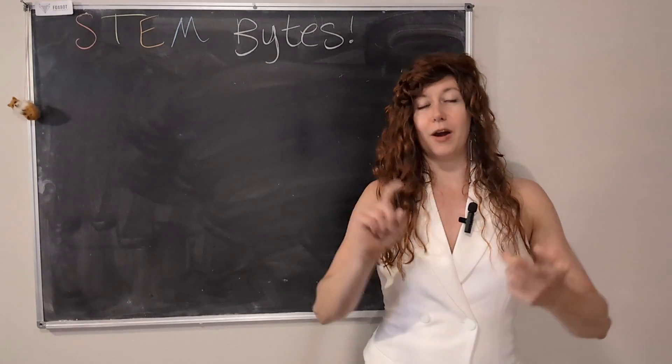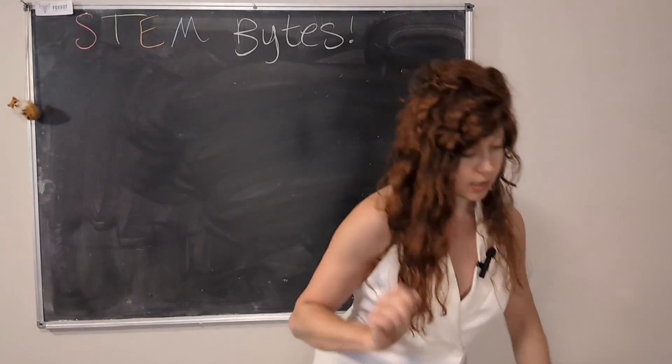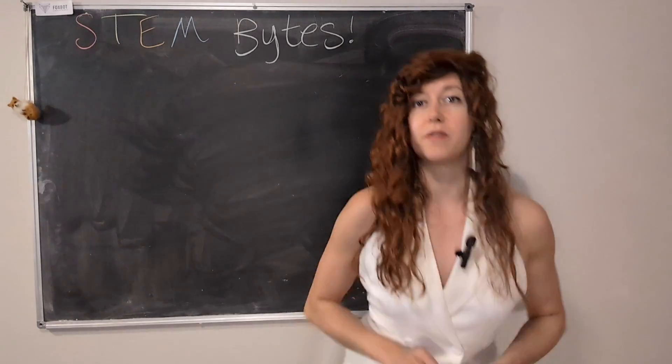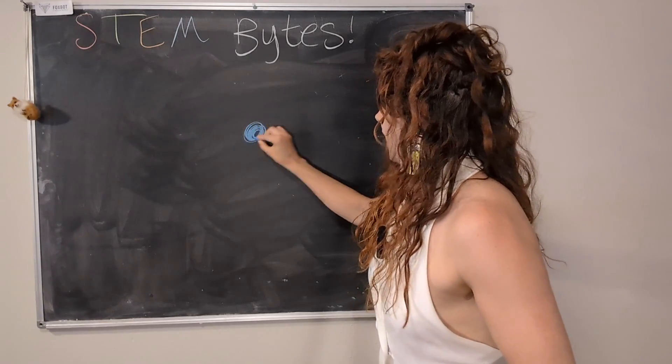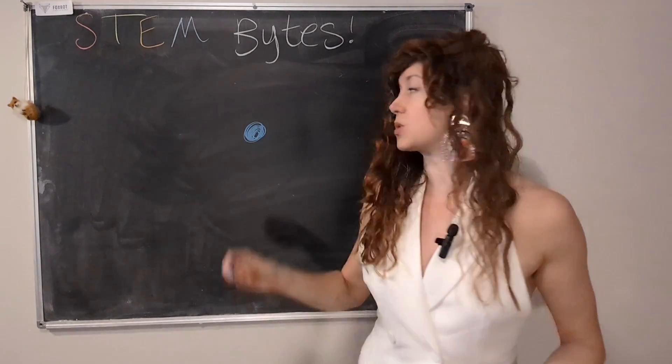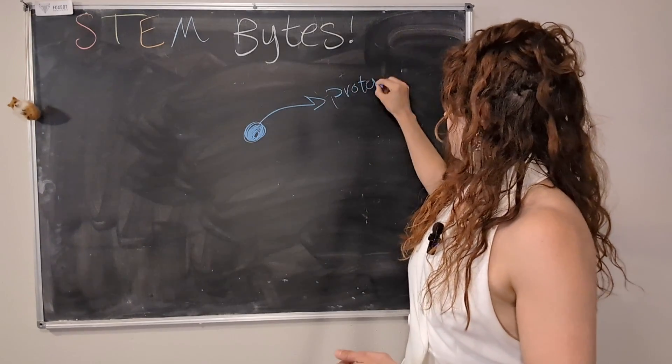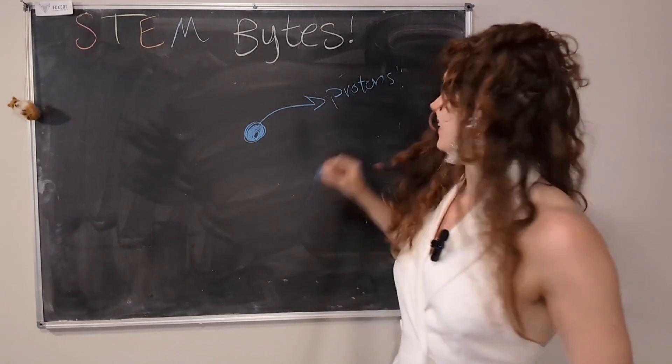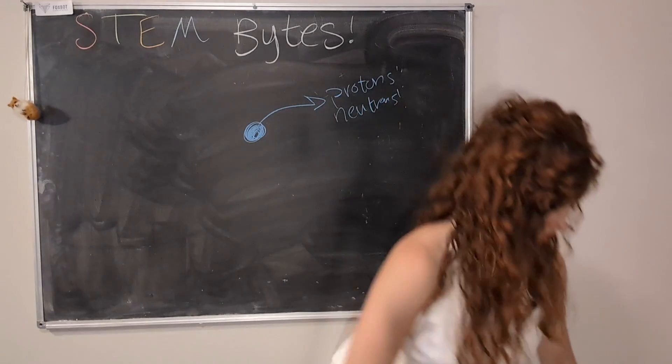Okay, so atoms are made up of protons, neutrons, and electrons. And they form two kind of distinct parts of the atom. So the first part is the nucleus. And the nucleus is where the protons and neutrons live. Protons! Yeah! Neutrons! Yeah! Okay.